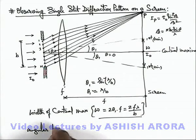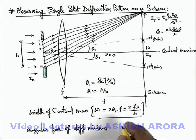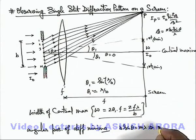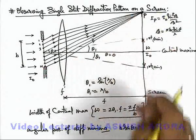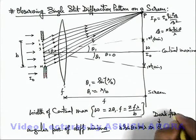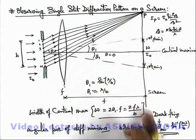Angular positions of different minima if we calculate, we have already discussed that minima is a position where b sine theta is equal to m lambda because we have taken the value of beta was m pi. This implies the value of theta minimum, wherever a minimum or a dark fringe is produced, the value of theta minimum is given as sine inverse of m lambda by b. This is the angular position from central maxima wherever a minima is produced.